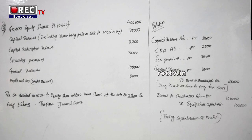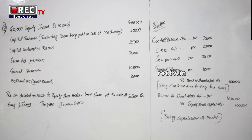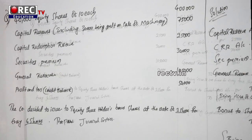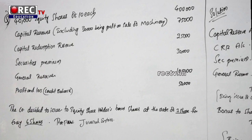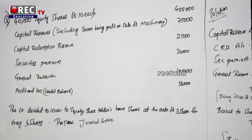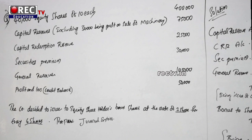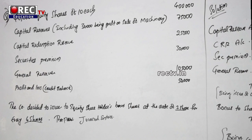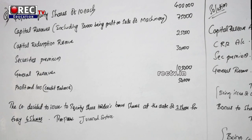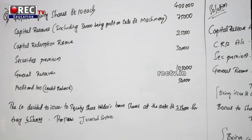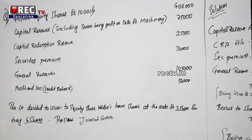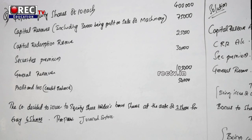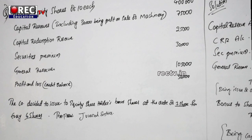On the left hand side we have the question part and on the right hand side we have the solution part. The question: 40,000 equity shares of ₹10 each — that is ₹4 lakhs. Capital reserve including ₹30,000 profit on sale of machinery amounts to ₹75,000. Capital redemption reserve: ₹25,000. Securities premium: ₹30,000. General reserve: ₹1,05,000. Profit and loss account credit balance: ₹50,000. The company decided to issue equity shareholders bonus shares at the rate of one share for every four shares. We have to prepare journal entries.